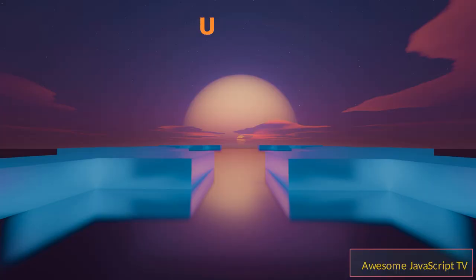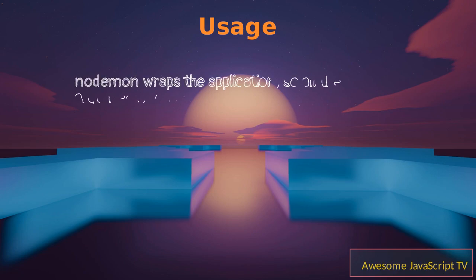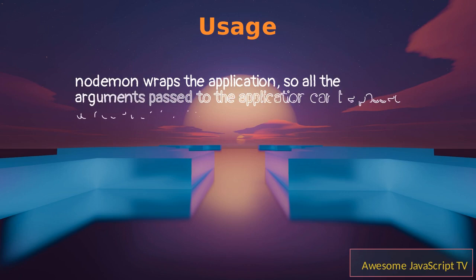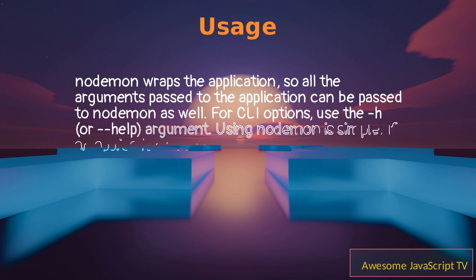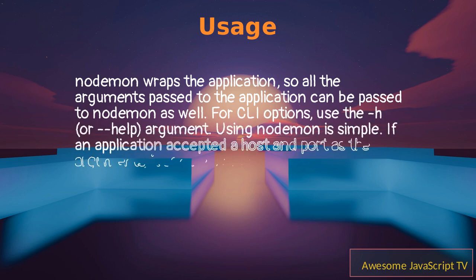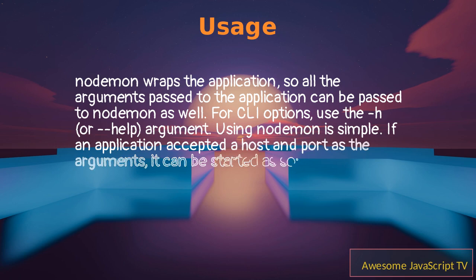NodeMond wraps the application, so all the arguments passed to the application can be passed to NodeMond as well. For CLI options, use the -h, or help, argument. Using NodeMond is simple. If an application accepted a host and port as the arguments, it can be started as so.